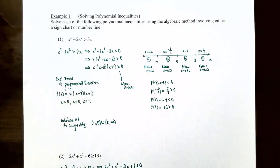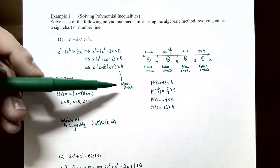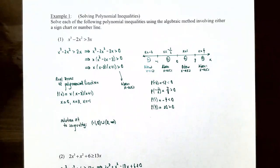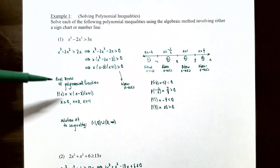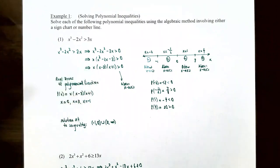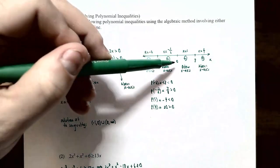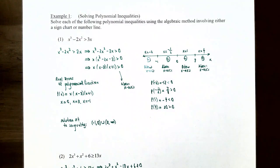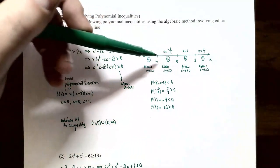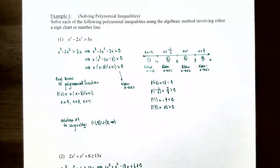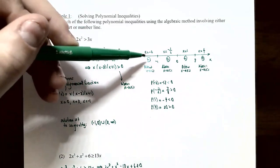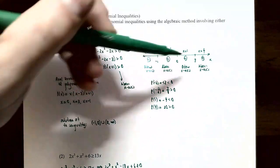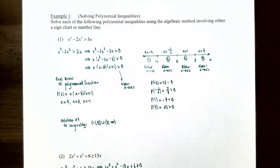Since the polynomial is on the left and the right side is zero, we find x-values where the function is above the x-axis. Setting x(x−3)(x+1) = 0 gives real zeros x=0, x=3, and x=−1. These divide the number line into four regions. We choose test values: x=−2 (left of −1), x=−½ (between −1 and 0), x=1 (between 0 and 3), and x=4 (right of 3).